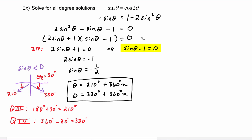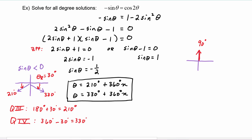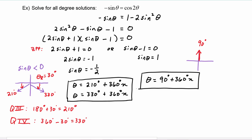In the second part of the equation, we add one to both sides and now we have sine of theta is equal to one. When we draw that picture, we know that theta has to be at 90 degrees. So naming all the possible solutions, theta will be 90 degrees plus 360 degrees times n, representing all the infinitely many coterminal angles. These are all the solutions to our original equation.